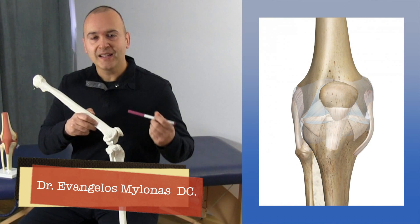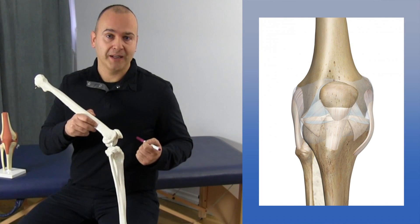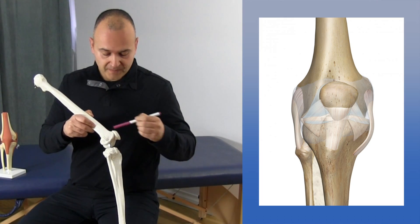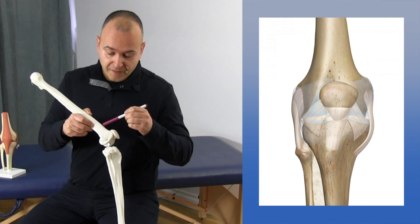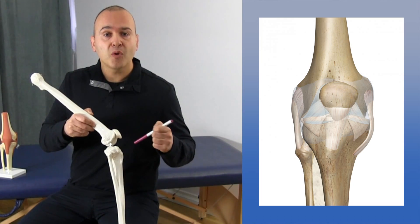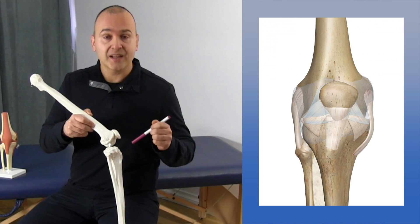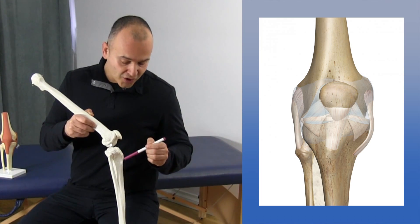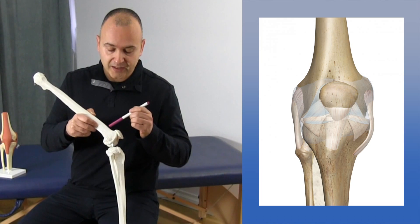Let's discuss the knee joint. The knee joint is a really interesting articulation of the body. The knee joint consists of three bones: the femur, the patella, and the tibia. Where the femur meets the tibia, this is known as the femorotibial joint. An interesting point not often discussed in anatomy class is that the patella does not articulate with the tibia — it only articulates with the femur.